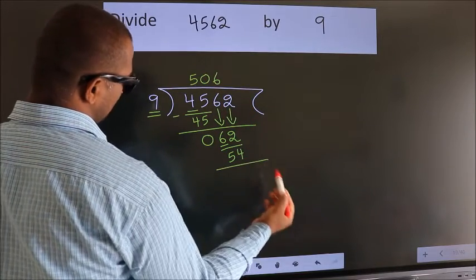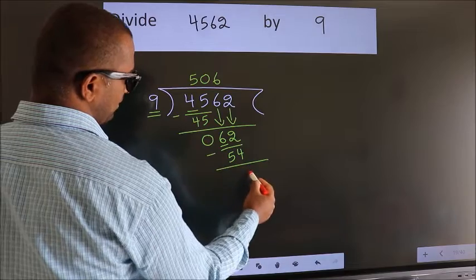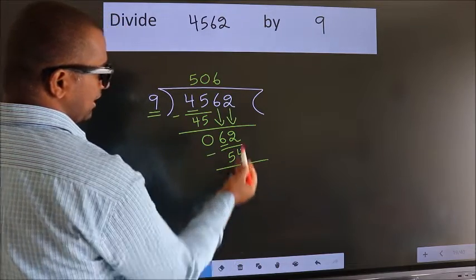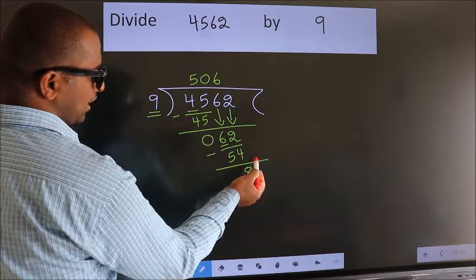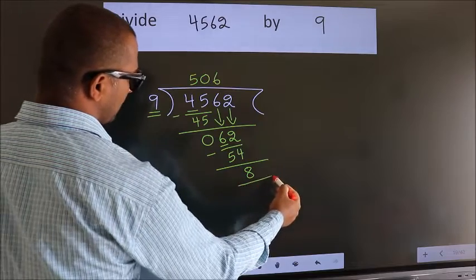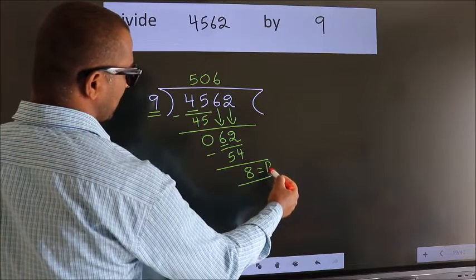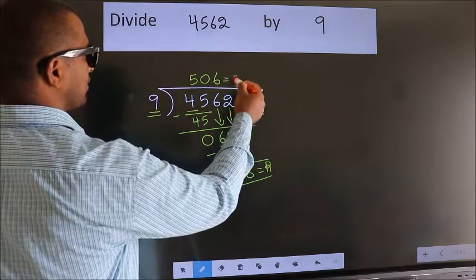Now we subtract and get 8. No more numbers to bring down, so we stop here. This is our remainder, and this is our quotient.